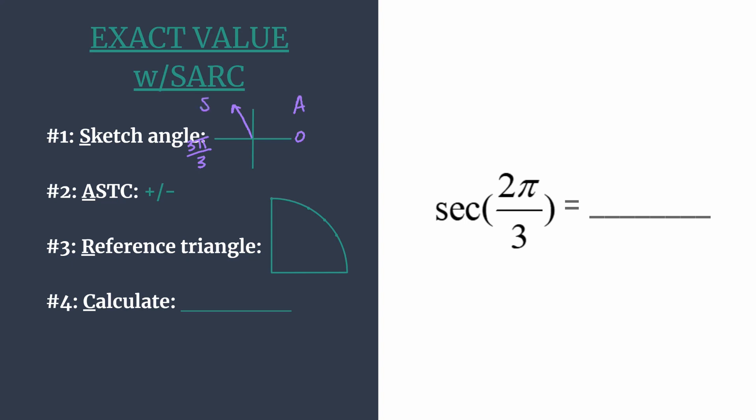In quadrant 2, sine and its reciprocal cosecant are positive. Well, we're trying to find the secant, so we should immediately know our final answer is negative. We'll circle our negative here too.